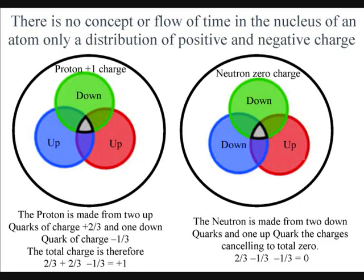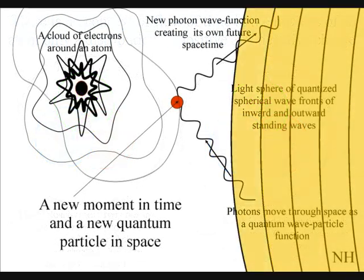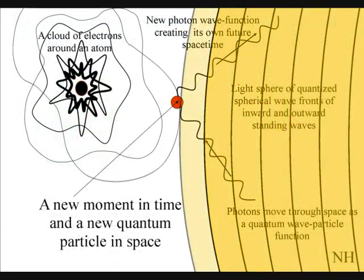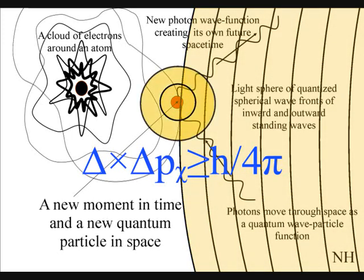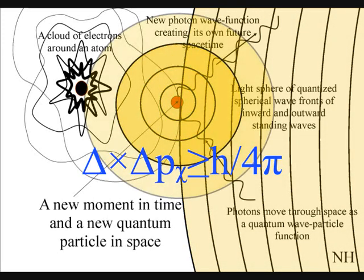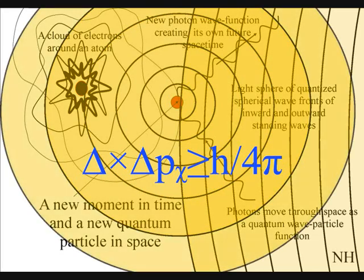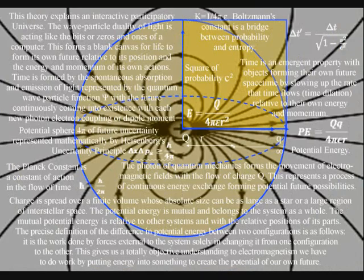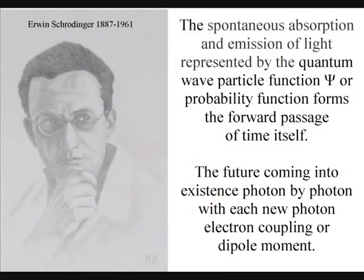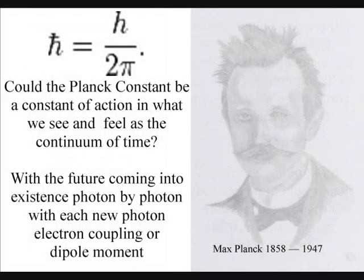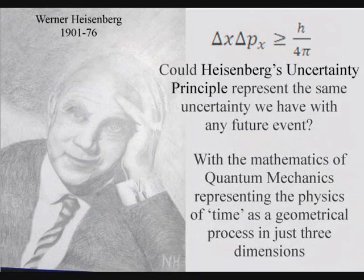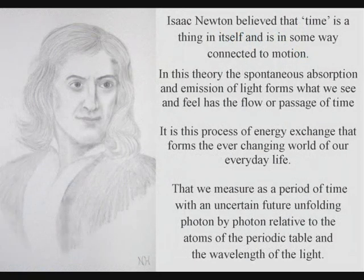But in this theory, nothing could be more logical, because the future is unfolding with each new photon-electron coupling or dipole moment, in an interactive process that is unfolding outside the atomic nucleus and is relative to the electromagnetic force. In such a theory, the mathematics of quantum mechanics represents the physics of time as a physical process, with classical physics representing processes over a period of time, as in Newton's differential equations.